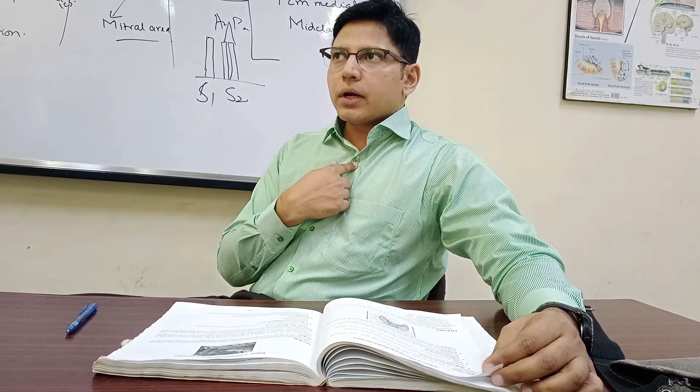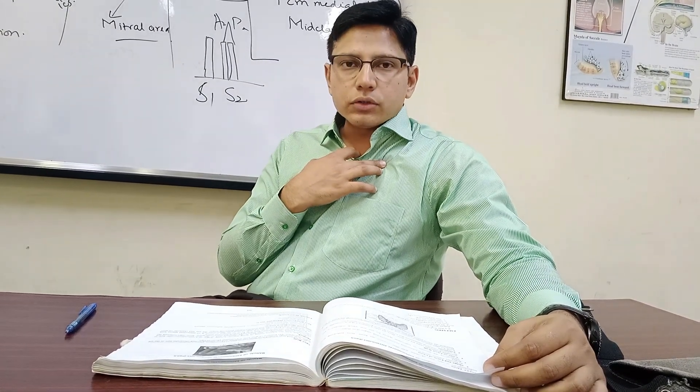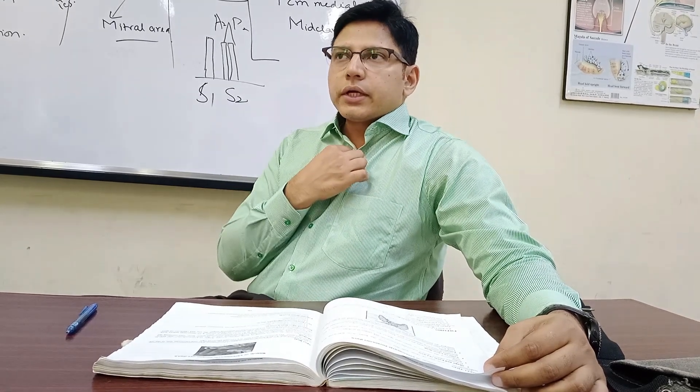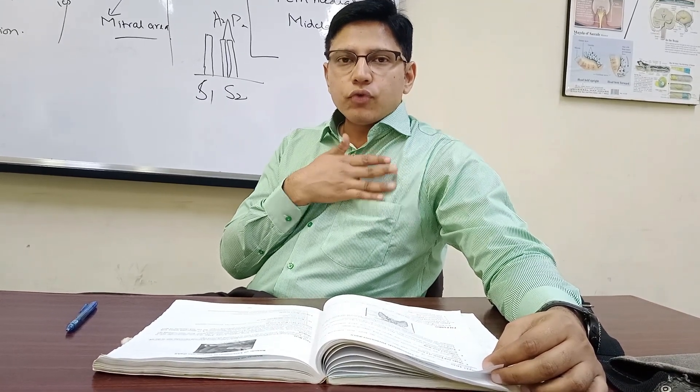The apex beat is normally in the 5th intercostal space. First, check at the angle of Louis — the suprasternal notch — for the 2nd intercostal space. The 2nd rib is identified at the second intercostal space, then move to the 3rd, 4th, and 5th intercostal spaces to feel for palpitations. You may need to combine inspection and palpation at this point.